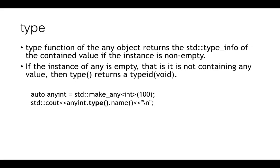The type function is a function on any object which tells you the type info of the content value if the instance is non-empty. If the instance is empty, then it will obviously return the type ID of void. Here you can see a simple example where you can find out the name of the type for any object holding an int value.